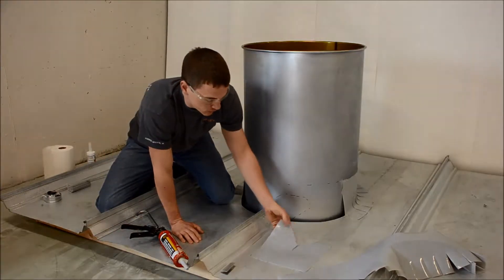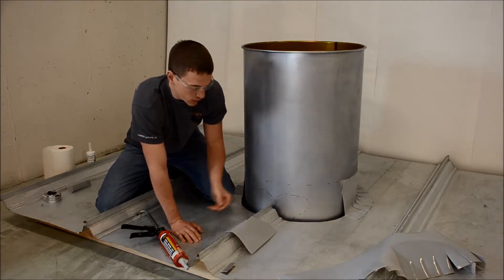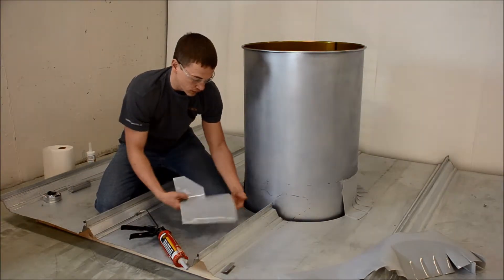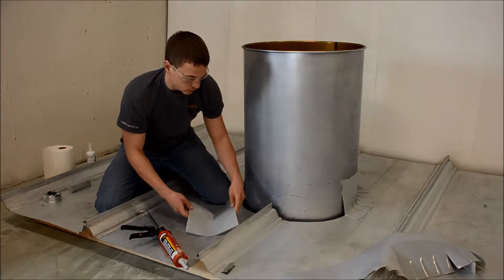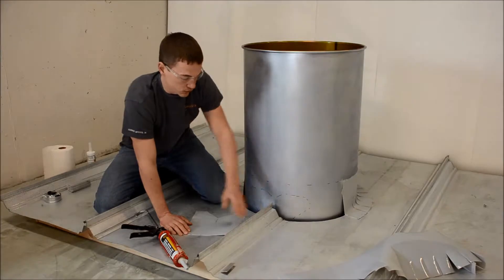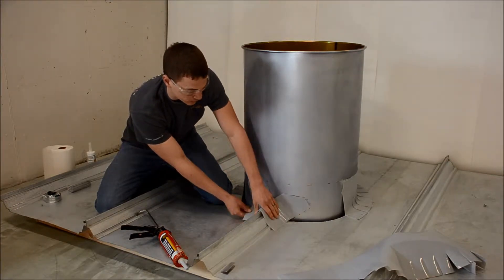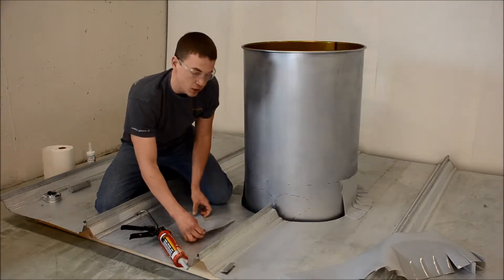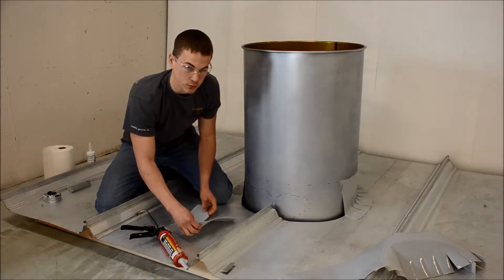We've pre-cut some pieces to show you how we would handle this particular detail. This first piece here is going to be installed from the standing seam to the round penetration itself. I went ahead and pre-laid this out and marked it with a sharpie just to show me where the outside edge of this particular piece would be.